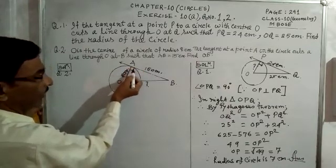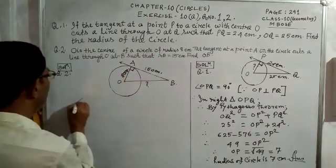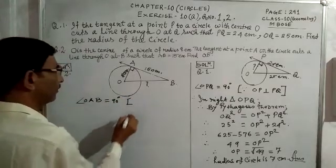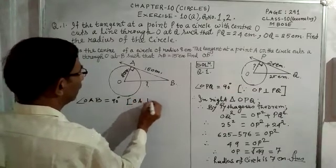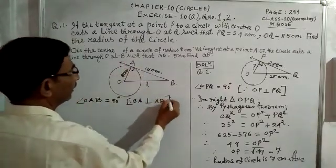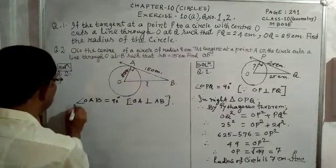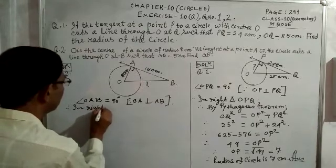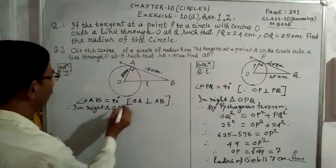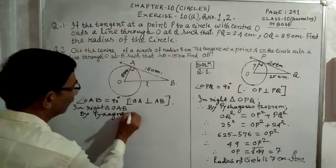Therefore, in right triangle OAB, by Pythagoras theorem: the right angle is at A, so the opposite side OB is the hypotenuse. Square of hypotenuse equals sum of squares of other two sides: OB² = OA² + AB².